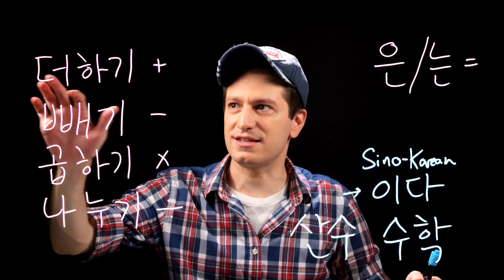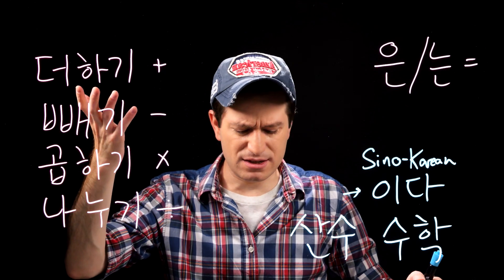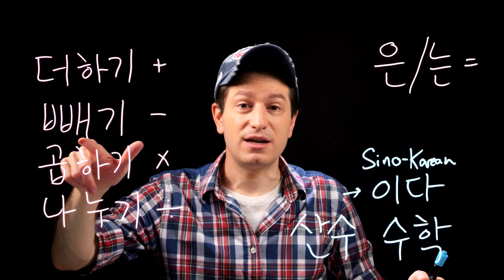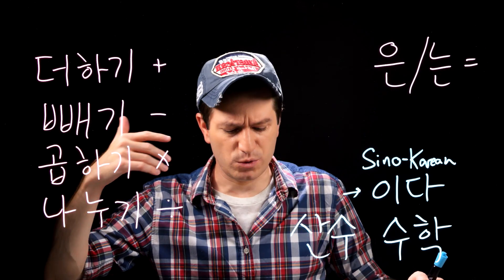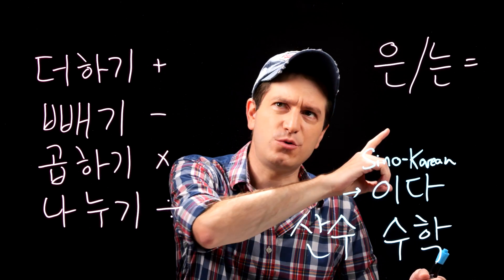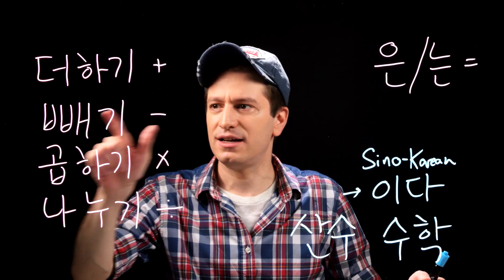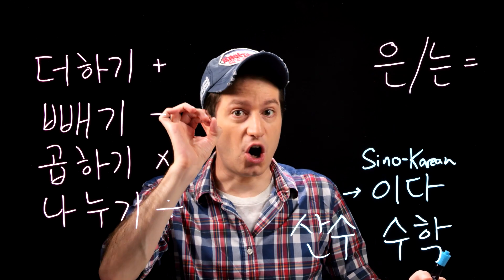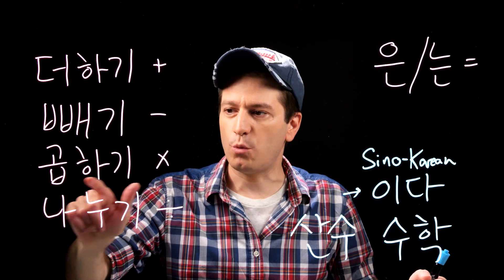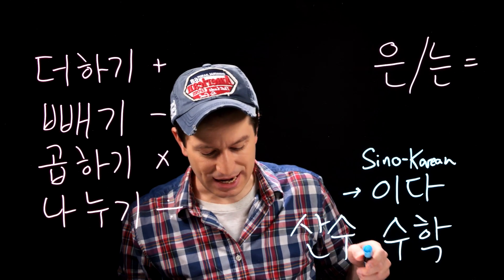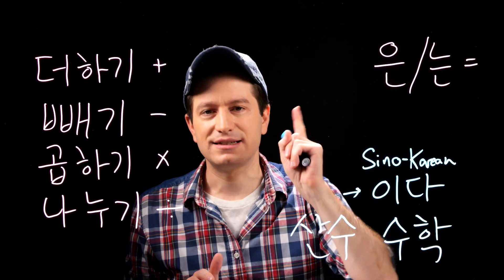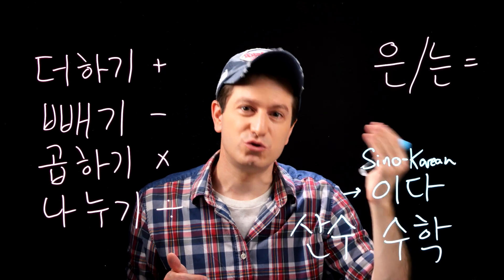We just did plus — 더하기. 더하기 literally means adding something, so addition. Next we have 빼기. 빼기 means subtracting or removing something. So if you were to say one minus one equals zero, you would say 일 빼기 일은 영. For multiplication, you would use the word 곱하기, which means multiplying. So if you were to say three times three equals nine, you would say 삼 곱하기 삼은 구.